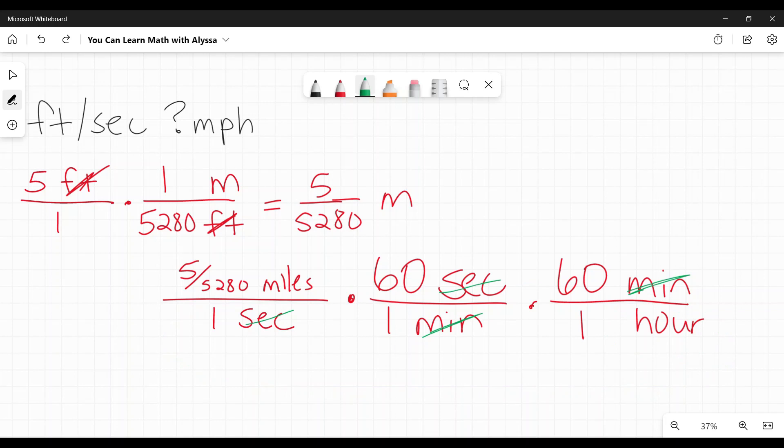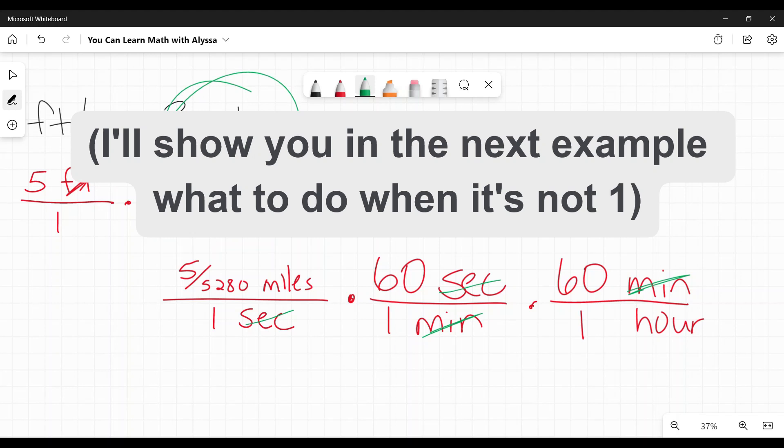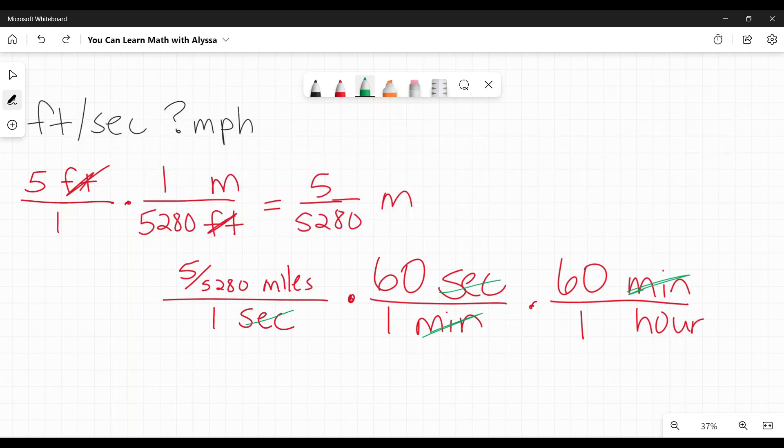And this is critical. Look at the bottom. I've got one times one times one. That is key. You need to have on the bottom be one. That's how many miles per one hour. When you say miles per hour, that's what you're saying. That hour needs to be one. And if you get to the end and it's not, then you're going to have to do some more converting. So if you can make sure you're doing that early on, it's very helpful.